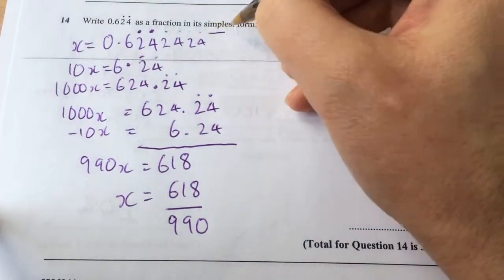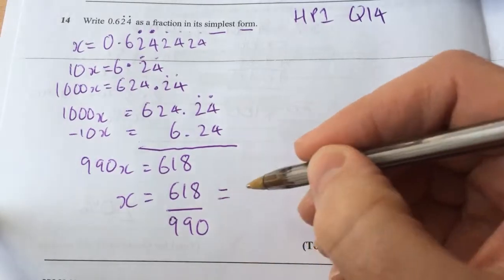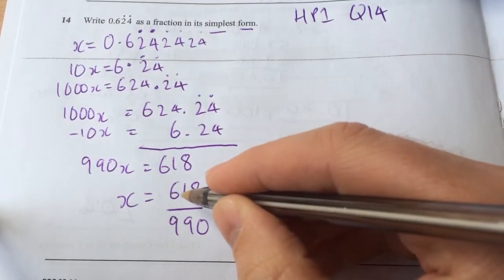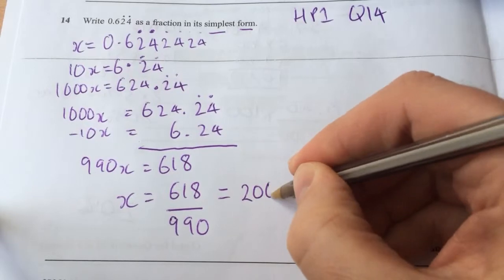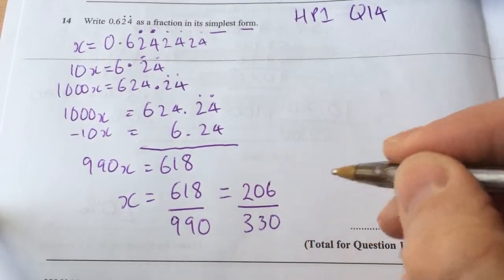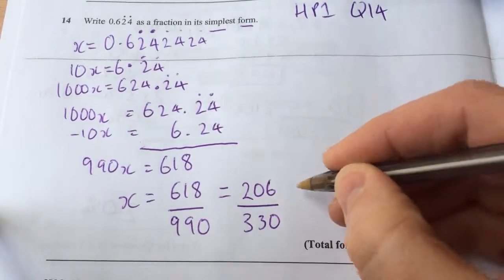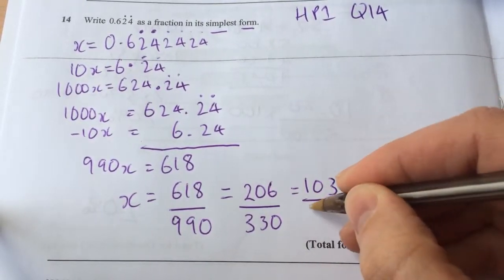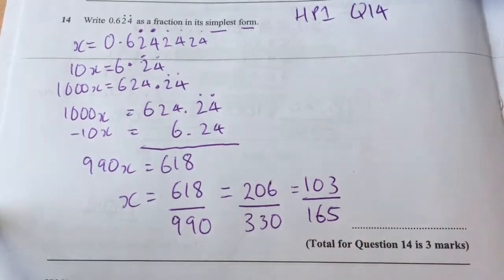They've asked us to put it in its simplest form. And I can just go through my 3 times table, divide that by 3, get 206, divide that by 3, and I get 330. And then I can see, well, I could get half of each of those, 103 over 165.